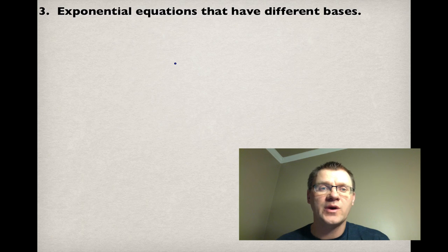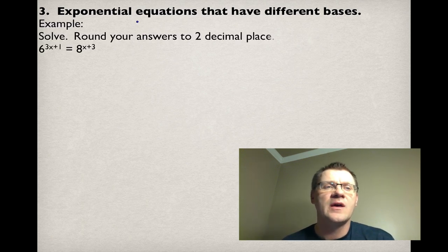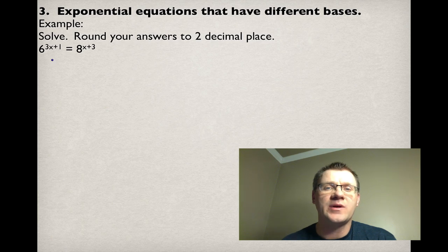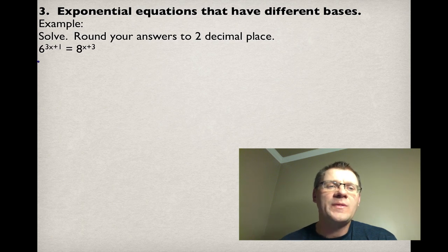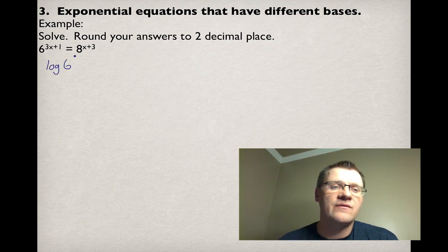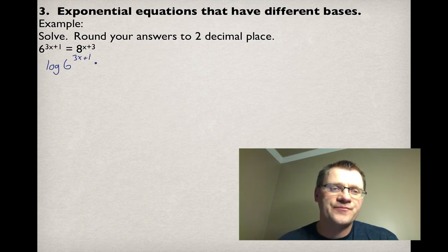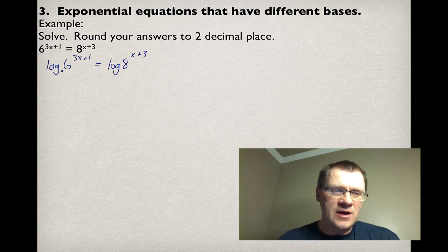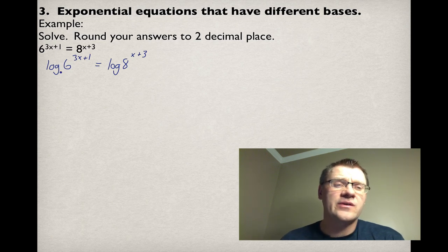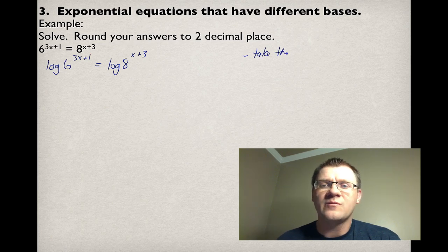Our last type of equation are exponential equations that have different bases. For example, solve and round your answers to two decimal places. We've got 6^(3x+1) = 8^(x+3). One thing that you can do with logarithms is apply a log to both sides. So that's log(6^(3x+1)) = log(8^(x+3)). Notice that I'm not putting in a base here. We'll leave it as a base 10, and that way we can use our calculators in the end. Because remember that your calculators work with a base of 10.